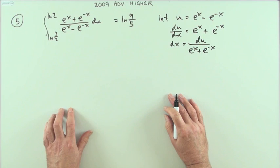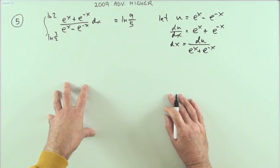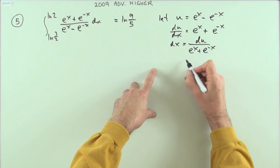But these limits, because I don't want to be changing it back again, I'll just, if I'm going to be changing the variables, I might as well change my limits while I'm at it. So changing the limits then.